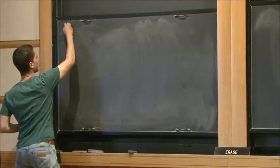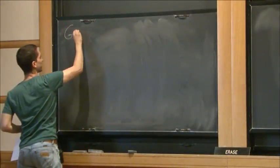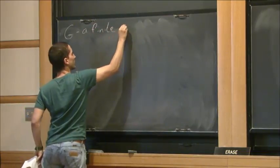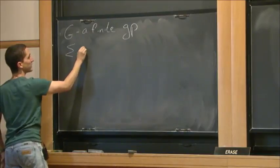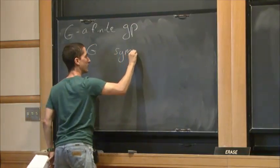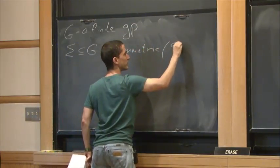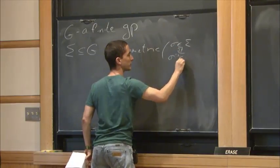So let me state the problem first. Let G be a finite group, and sigma is a subset of G which is symmetric, by which I mean that if an element belongs to sigma, then its inverse also belongs to sigma.